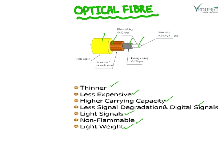The core and cladding both play a special role. The core diameter can range from approximately 5 micrometers to 100 micrometers. In the case of cladding, it is usually in the range of 125 micrometers, for greater strength and protection of the fiber. The outermost jacket coating has a diameter of 250 micrometers. So this is the general structure of the optical fiber.